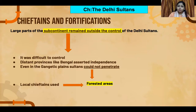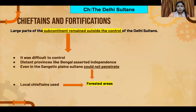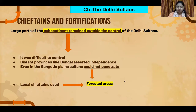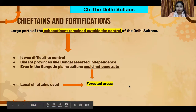Even the people who controlled the Gangetic plains — including the Sultans — could not penetrate or interfere in those areas. The reason was the large forested areas along the Gangetic plains, which made movement very difficult. Nature itself protected those regions, and local chieftains also used those forested areas for their own purposes.